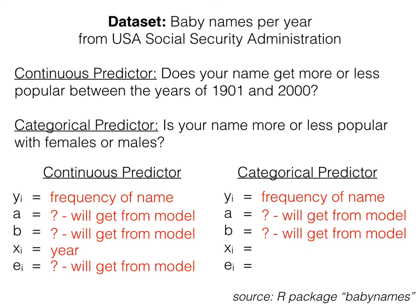Our a, we don't know. We'll get it from our model. Our b, we don't know. We'll get it from our model. Our x is sex, female or male. And our residual, we don't know. We'll get it from our model.